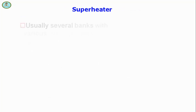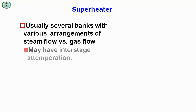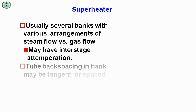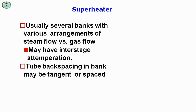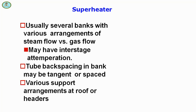The superheater usually consists of several banks with various arrangements of steam flow relative to gas flow. It may have interstage attemperators. Tube back-spacing impact may be tangent or spaced, with various support arrangements at row headers.